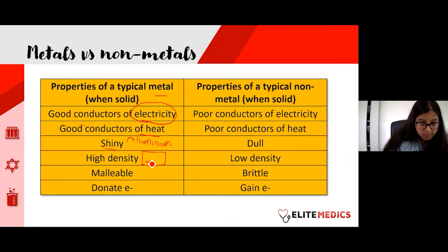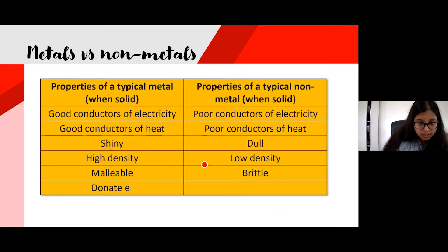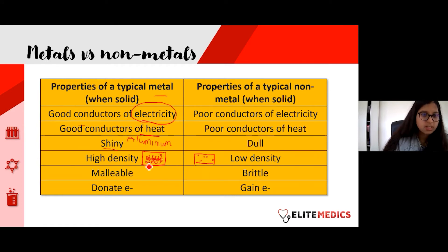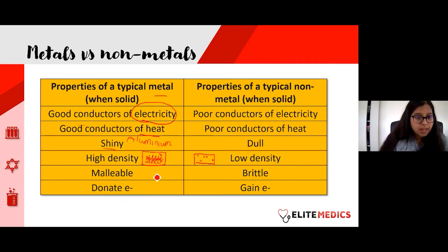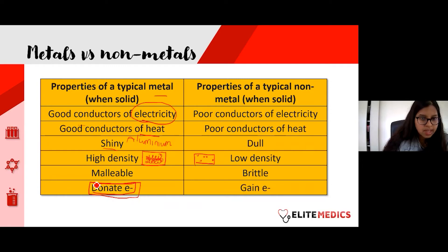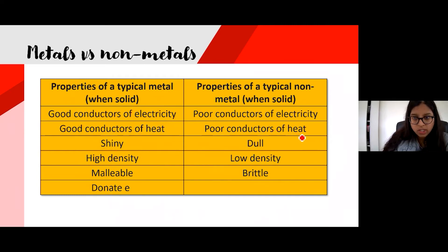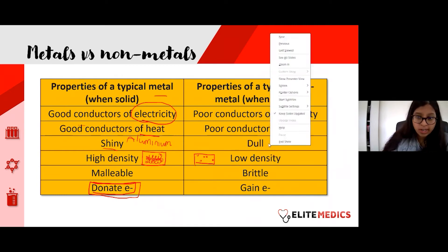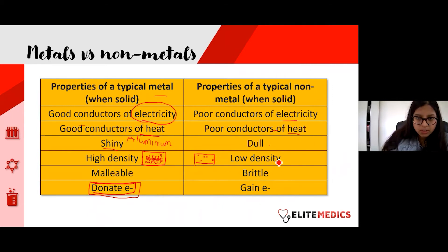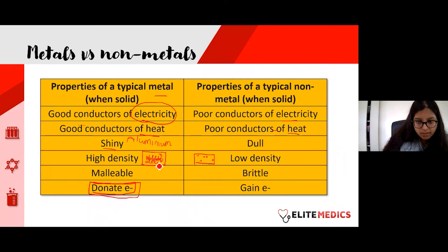Metals are malleable — like play-doh, they're soft and you can shape them — and they can donate electrons. Non-metals are pretty much the opposite: poor conductors of heat and electricity, dull rather than shiny, low density, and brittle — meaning they can break easily, like peanut brittle. Non-metals can gain electrons.